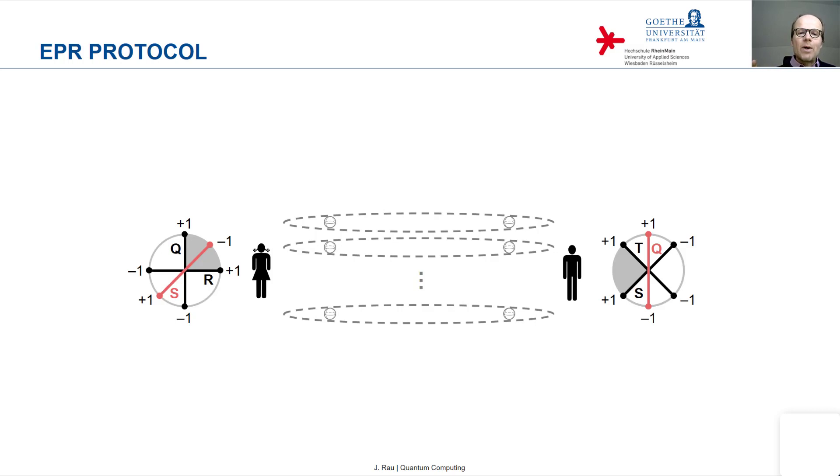This Bell state beta 11, however, has the additional property that this perfect anti-correlation also holds for arbitrary measurements, not just in the standard basis. So in an arbitrary basis.